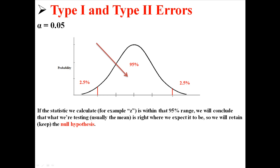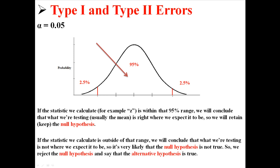If the statistic that we calculate — like a Z or a T — is within that 95% range, we can conclude that what we're testing, usually the mean, is right where we expect it to be. So we will retain, or keep, the null hypothesis. If the statistic we calculate is outside of that 95% range, we will conclude that what we're testing is not what we expect it to be, and it's very likely that the null hypothesis is not true. So we're going to reject the null hypothesis and say that the alternative hypothesis is true — the mean is so unlikely to show up there that it's probably different from what we assumed.